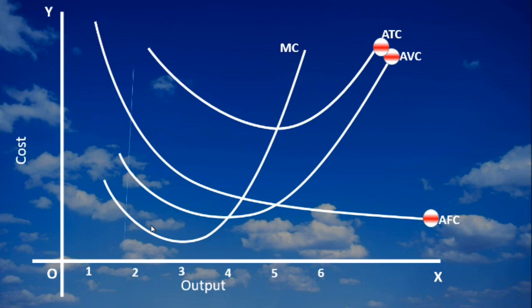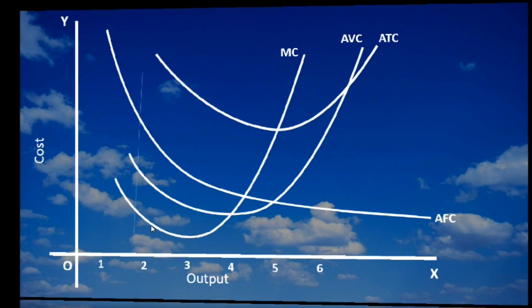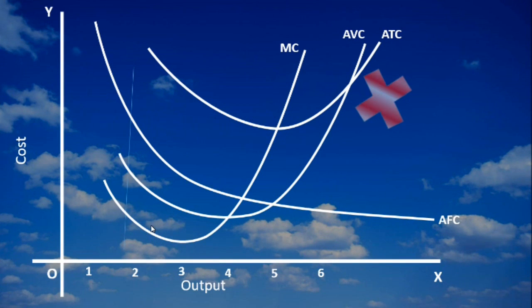Fifth relation. Average total cost and average variable cost will never cut each other. The reason is Average fixed cost will never become zero.